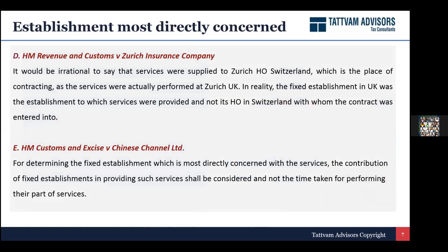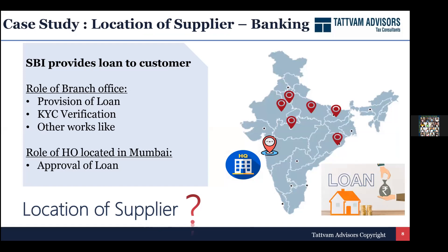A banking industry example: a customer approaches an SBI branch for a loan. The branch undertakes all initial scrutiny, verification and documentation, then provides documents to the head office in Mumbai for approval since the loan exceeds a certain limit. To my mind the branch is the establishment most directly concerned because it is actually executing the contract with the customer, dealing with the customer and doing the loan processing and verification. The head office merely provides approval and administrative tasks. So the branch should raise the invoice to the customer, and the head office should raise a cross charge invoice on the branch for support.